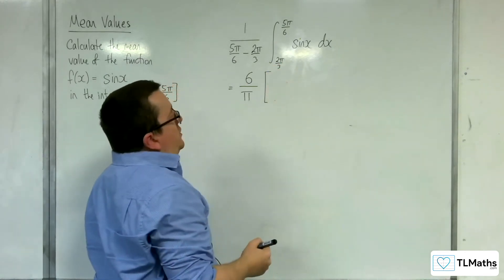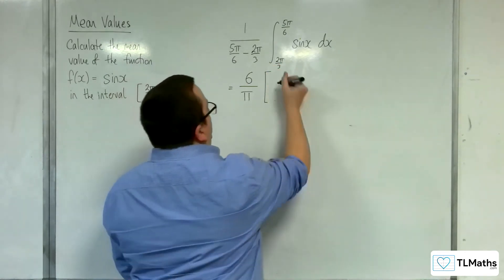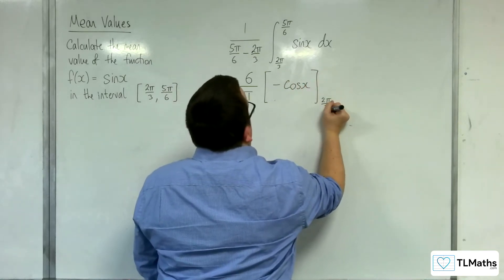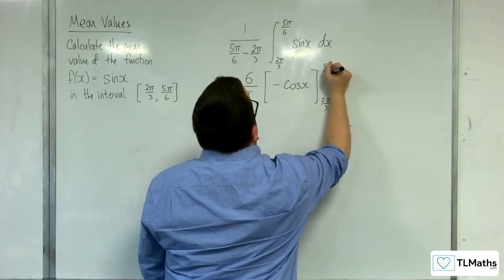Now, sine x, we know, integrates to minus cosine of x. That's to be integrated between 2 pi over 3 and 5 pi over 6.